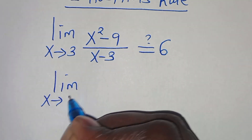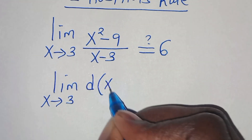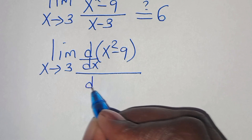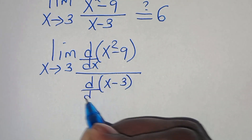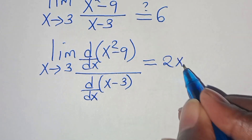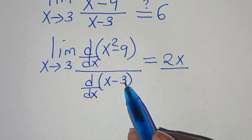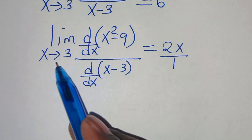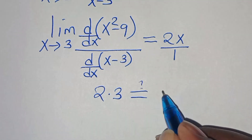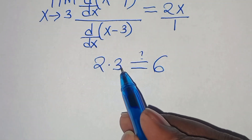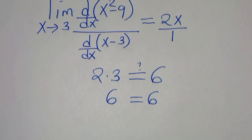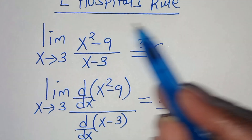Applying L'Hôpital's rule: we take the limit as x tends to 3 of the derivative of x squared minus 9 with respect to x, divided by the derivative of x minus 3 with respect to x. The derivative of x squared minus 9 is 2x, divided by the derivative of x minus 3, which is 1. Substituting x equals 3: 2 times 3 equals 6, which equals 6. So this problem can only be solved by applying L'Hôpital's rule.